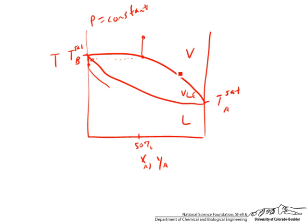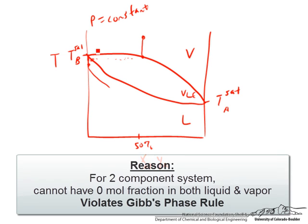And so with the two-component mixture, as you can see, you can't have that case. That would violate the Gibbs phase rule, that there should be only one temperature at which you can have a pure liquid and a vapor that also contains that phase.